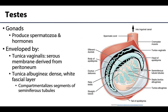The testes are located within the scrotum and are gonads responsible for the production of sperm and hormones, specifically testosterone. Their location in the scrotum rather than as part of the internal pelvic viscera plays a role in maintaining testicular temperature at around three to four degrees Celsius below body temperature. Location is not the only factor contributing to this — another will be discussed momentarily.